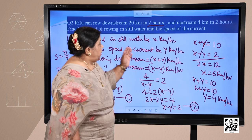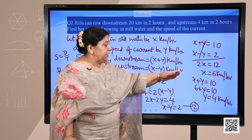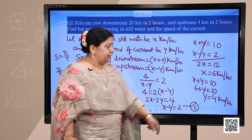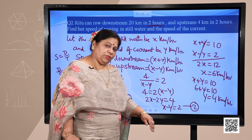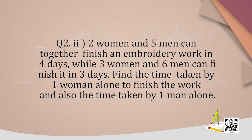We have obtained the speed in still water and speed of the current. I hope it is clear. The next question says: 2 women and 5 men can together finish an embroidery work in 4 days, while 3 women and 6 men can finish it in 3 days. Find the time taken by 1 woman alone and by 1 man alone to finish the work.